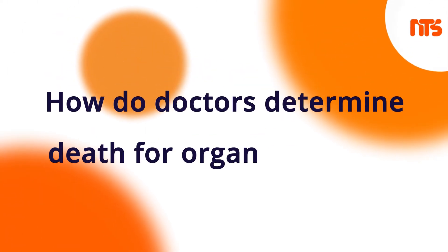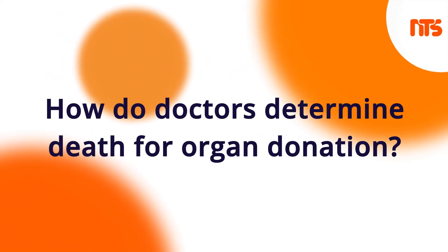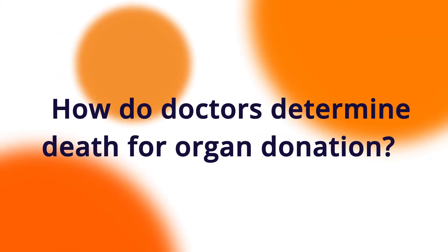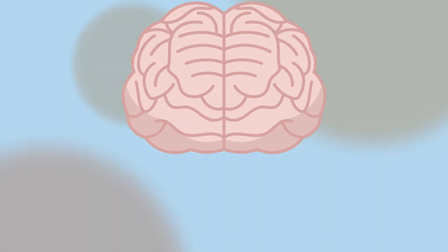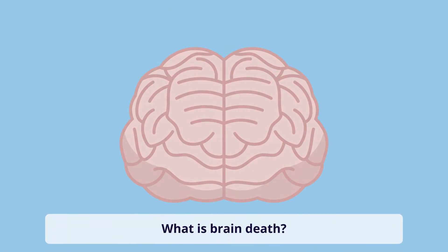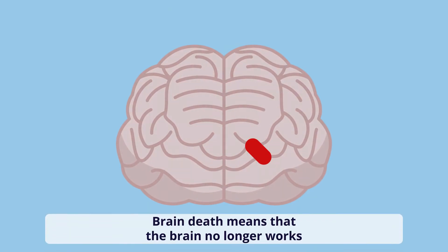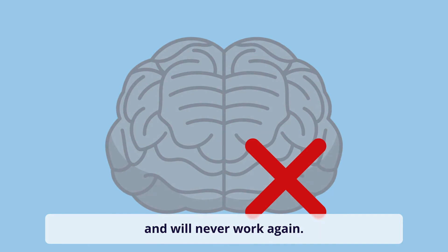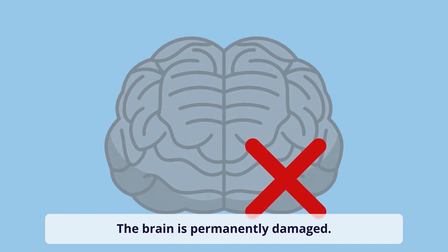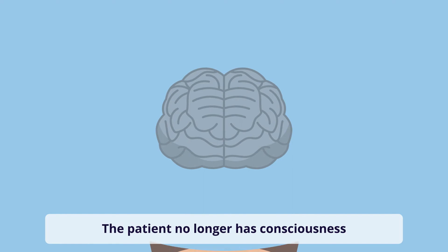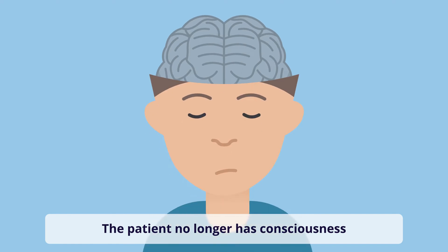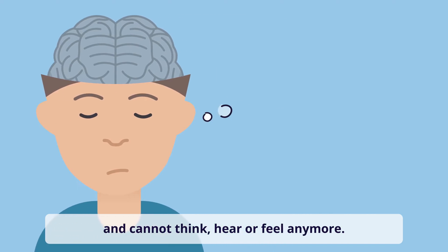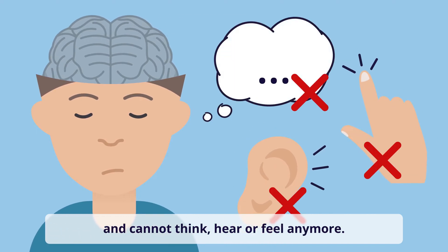How do doctors determine death for organ donation? What is brain death? Brain death means that the brain no longer works and will never work again. The brain is permanently damaged. The patient no longer has consciousness and cannot think, hear, or feel anymore.